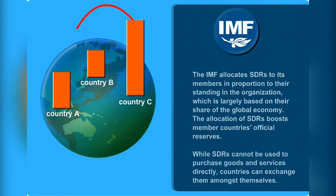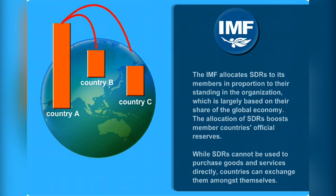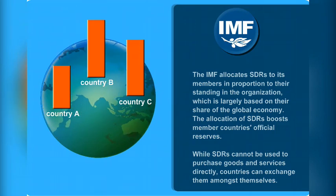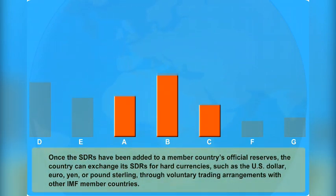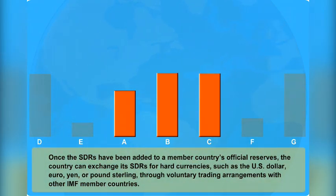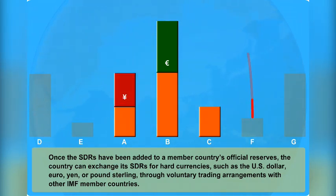While SDRs cannot be used to purchase goods and services directly, countries can exchange them amongst themselves. Once the SDRs have been added to a member country's official reserves, a country can exchange its SDRs for hard currencies such as the US dollar, euro, yen, or pound through voluntary trading arrangements with other IMF member countries.